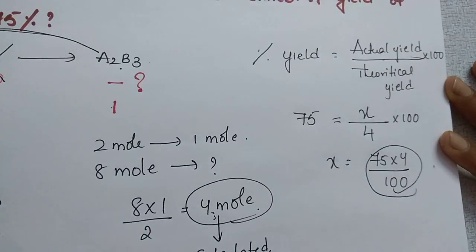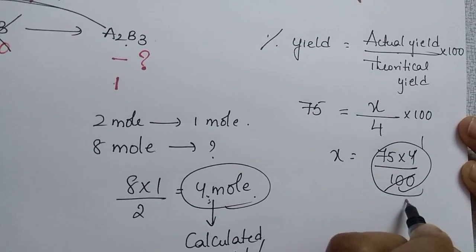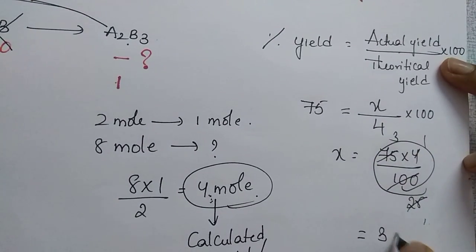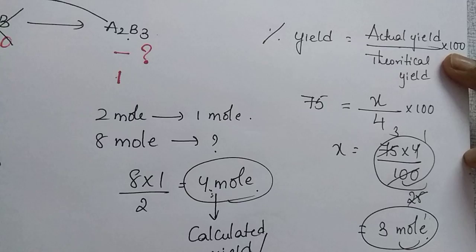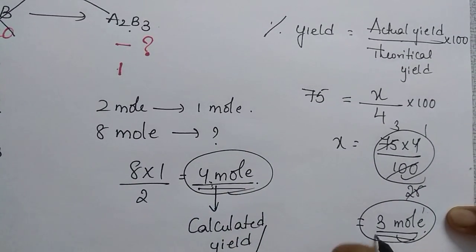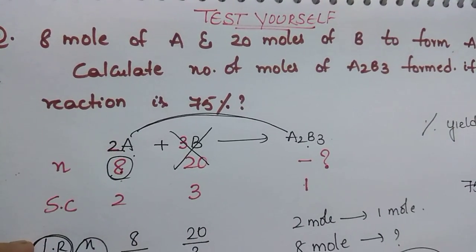So the answer is 3 moles. This is the actual yield. We expected 4 moles from the reaction but we got 3 moles. I hope you like this video, thanks for watching.